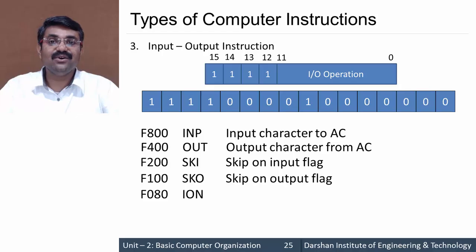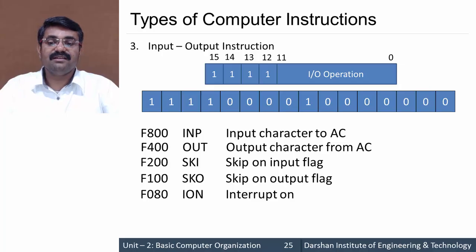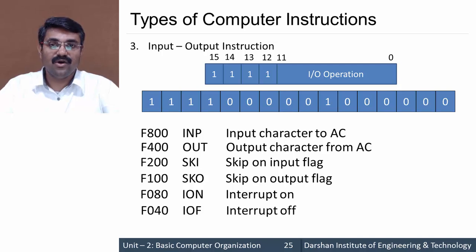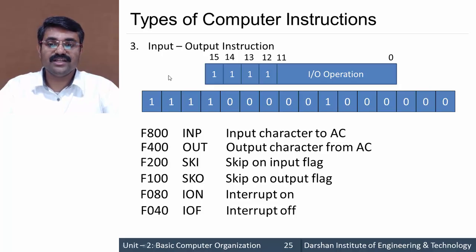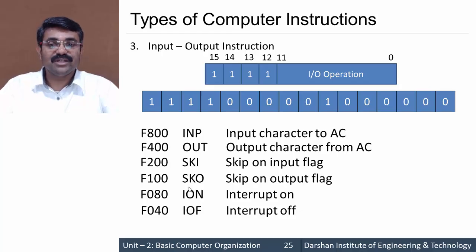Code F080 is ION — interrupt enable on, meaning the interrupt is enabled. Code F040 is IOF — interrupt enable off, turning the interrupt off. This gives us 6 input/output instructions. Combining all three types — memory reference, register reference, and input/output instructions — the basic computer has a total of 25 computer instructions.